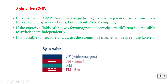Next is spin valve GMR. In spin valve GMR, two ferromagnetic layers are separated by a thin non-magnetic spacer of approximately three nanometers, but without any RKKY coupling like in multi-layer GMR. Here the coercive fields of the two ferromagnetic electrodes are different, so it is possible to switch them independently. It is also possible to measure and adjust the strength of magnetism between the layers.